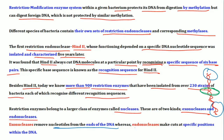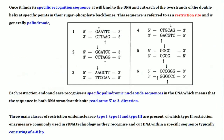Exonucleases cut at terminal ends, while endonucleases cut at a specific sequence within the strand. Once an endonuclease finds a specific recognition sequence, it will bind to the DNA and cut each of the two strands at a specific point. This specific sequence is referred to as the restriction site.